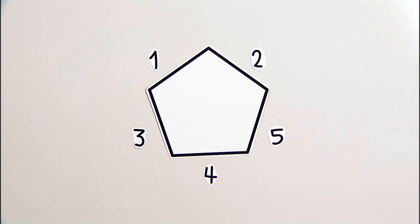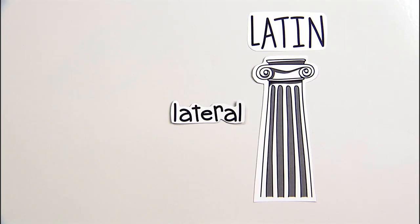When we're talking about how many sides something has, we usually use the word lateral, which comes from Latin. So it makes sense that we'd use Latin prefixes: unilateral, bilateral, trilateral, quadrilateral.